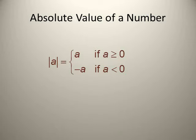If the number inside the absolute value is positive or equal to zero, the number remains as it is. For example, if it was three, the answer would be three; if it was four, the answer would be four. So |A| when A ≥ 0 equals A.